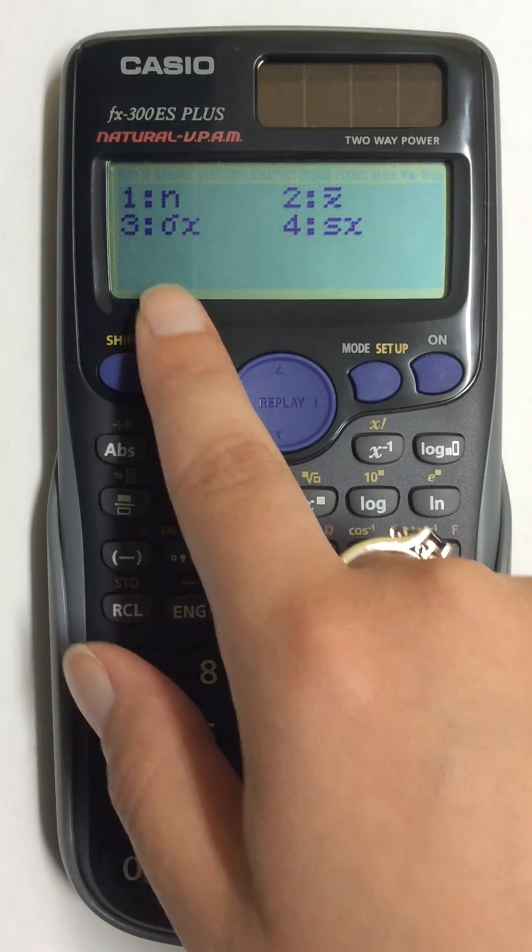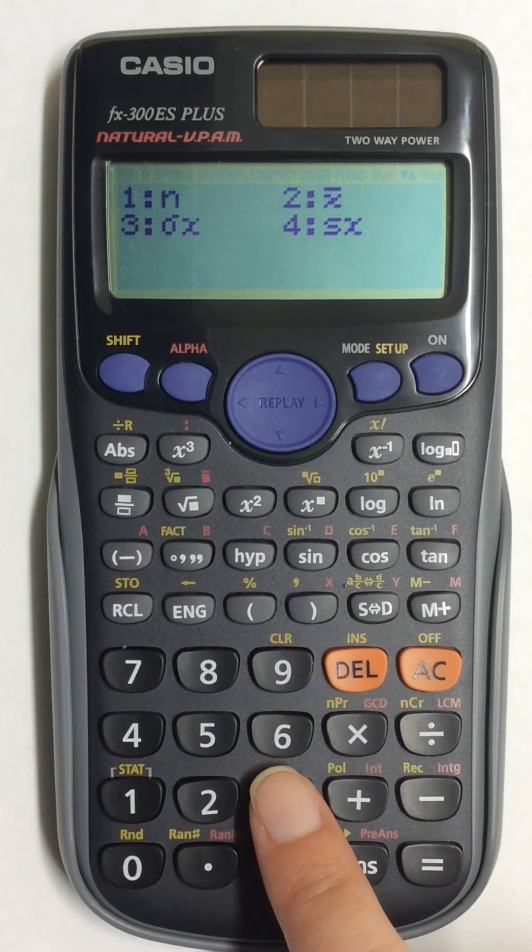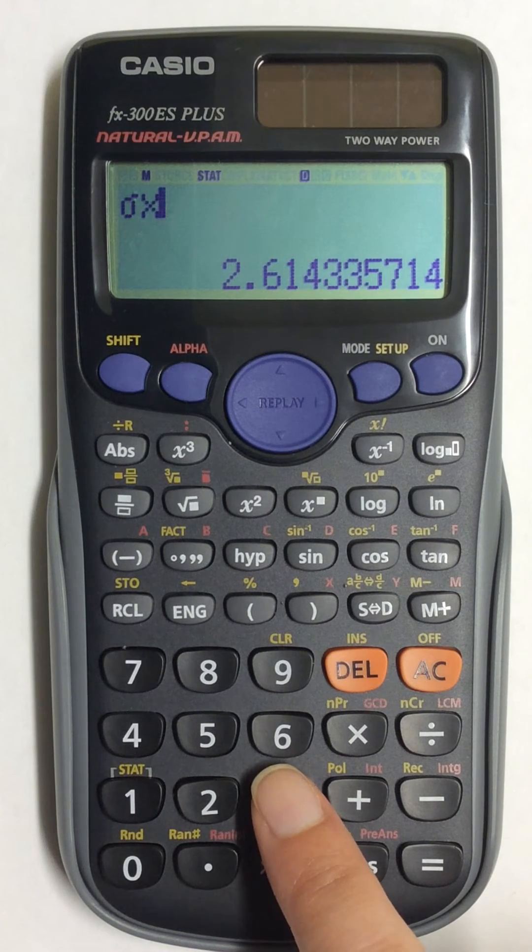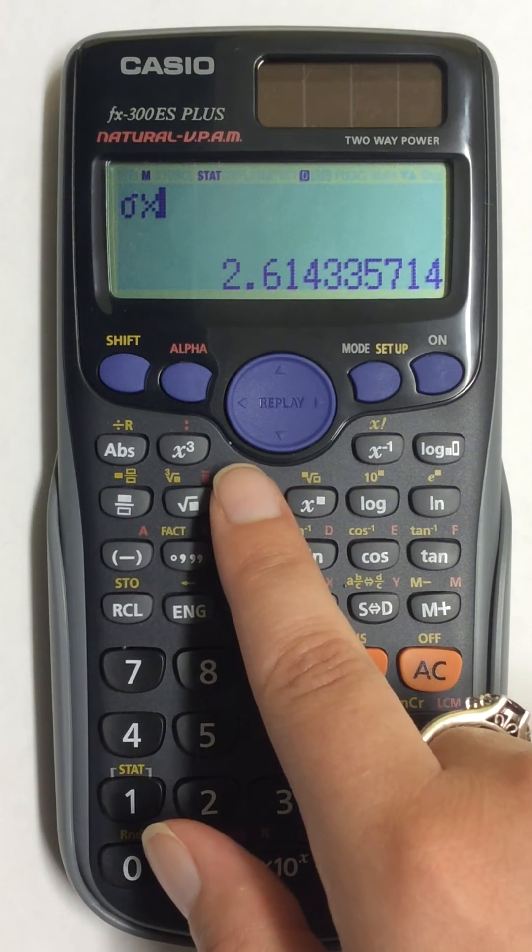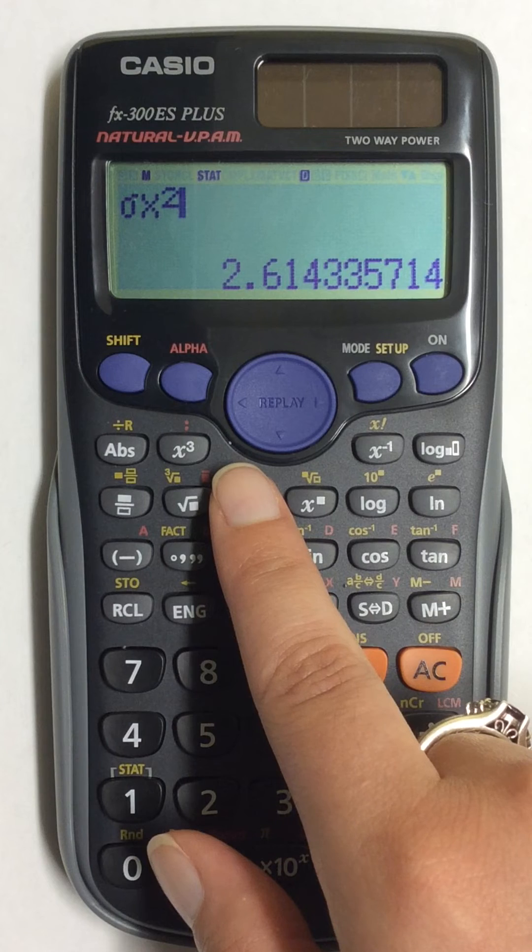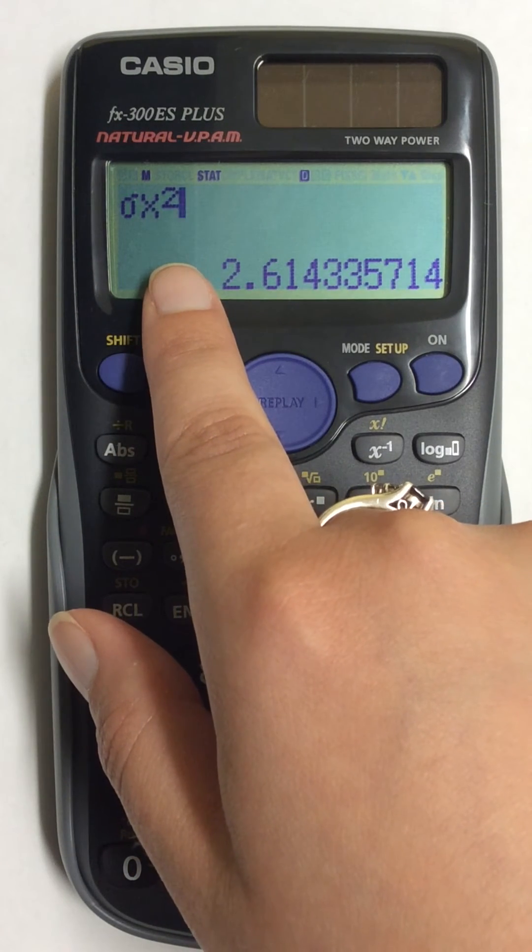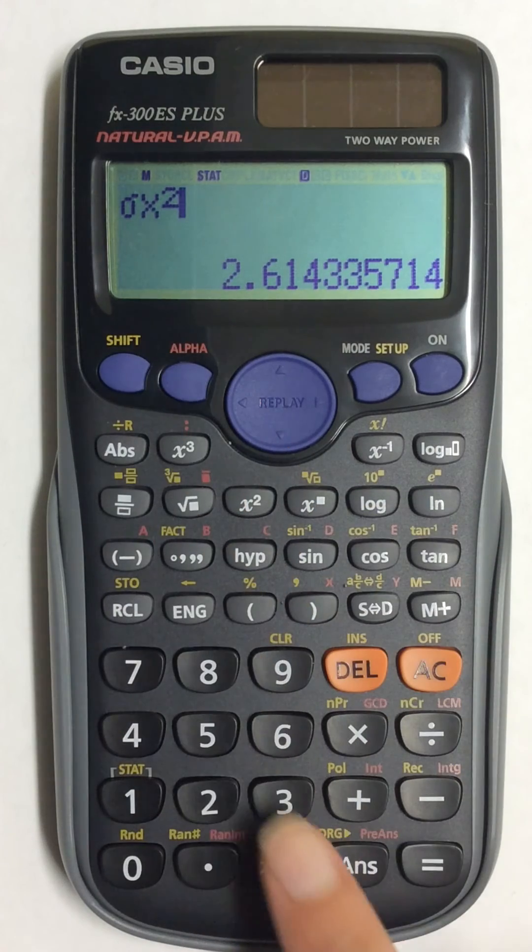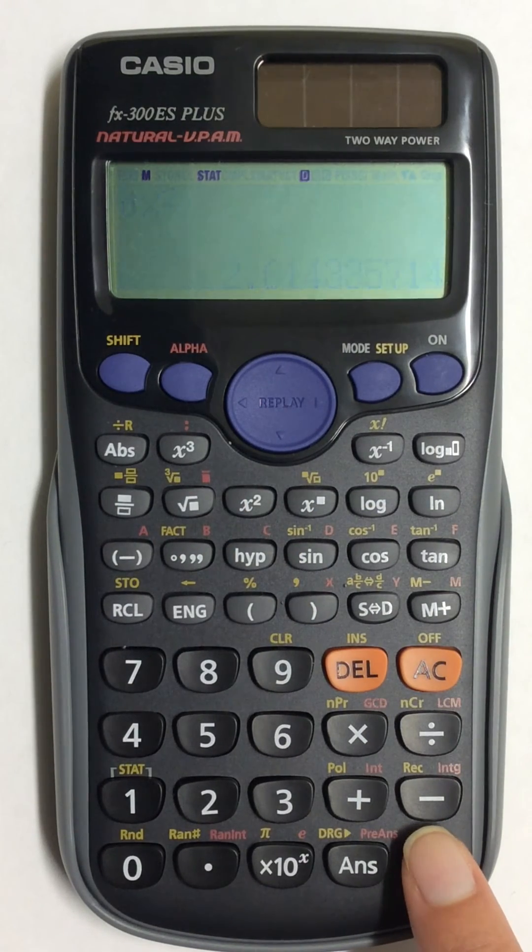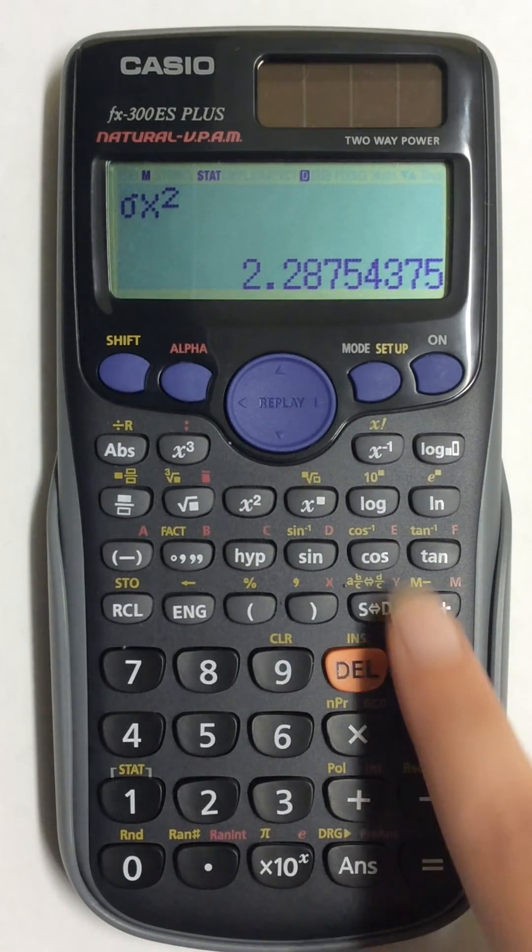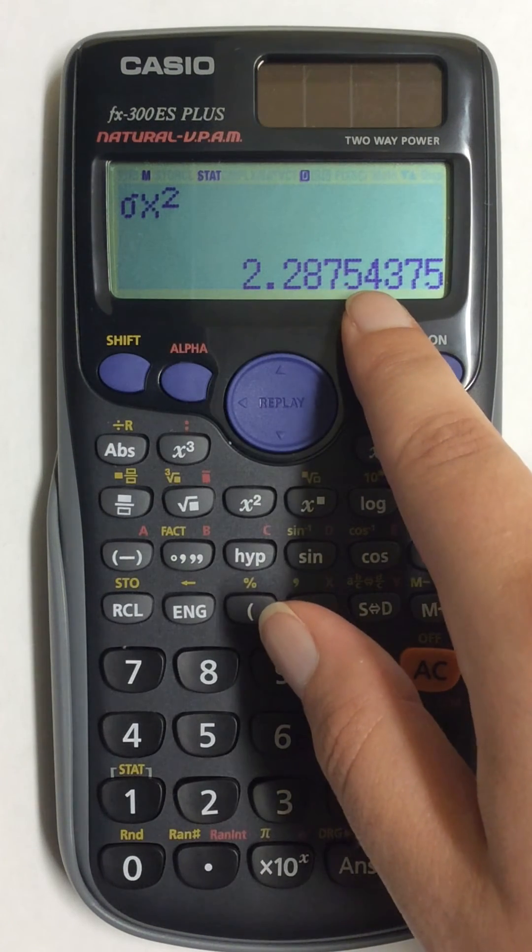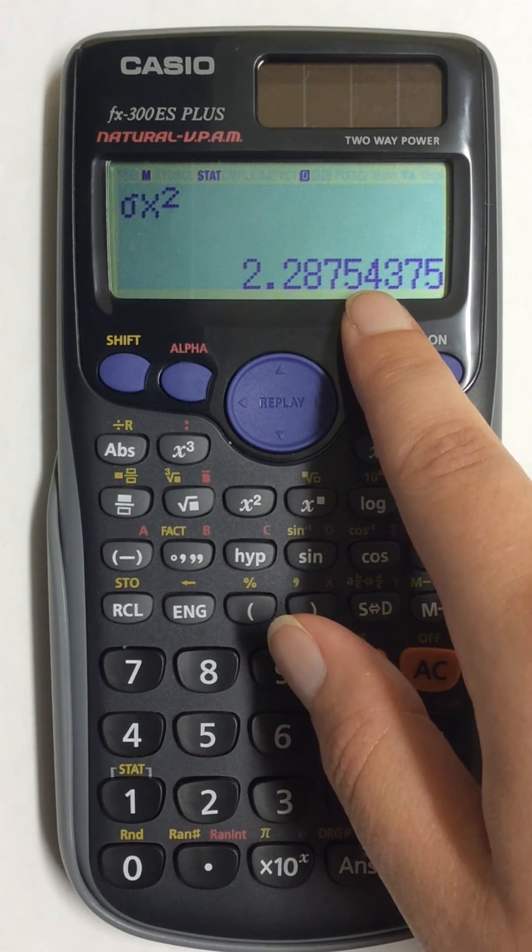This time I'll choose population, so number 3. And then you can square it right from here if you choose to. So this right here will give me variance. And now I can hit equals. So this number here is population variance.